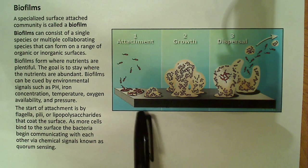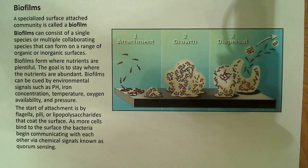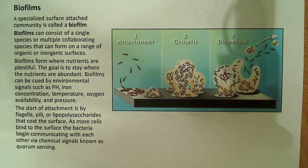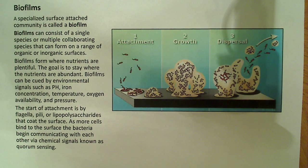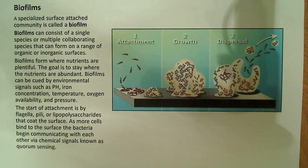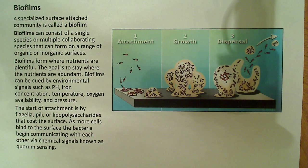Obviously, the first step in forming on any surface is going to be attachment. But first I should say why these biofilms form in the first place. Generally, the reason is nutrients — they're going to form in places where nutrients are plentiful. You want to establish a home base in a place where there's lots of food. The goal is to stay where the nutrients are abundant.